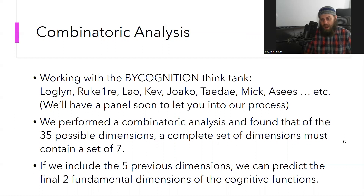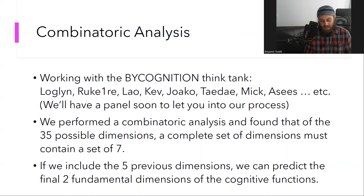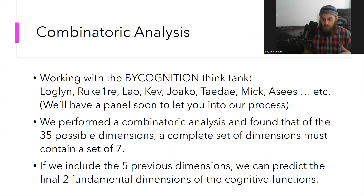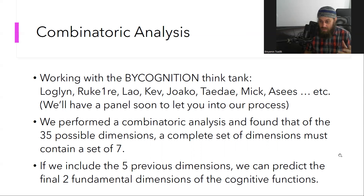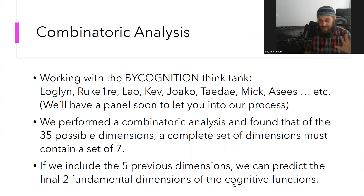We performed basically a combinatoric analysis and found that there are 35 possible dimensions. We do that through eight choose four, which ends up being 70 pairs — so that's 35 dichotomies. Out of these 35 possible dichotomies, a complete set of dimensions must contain seven, and we'll show you why it must be seven. All of the other 28 aren't really the primary dimensions, though some contribute. The core is seven. And so if we include the five previous dimensions, we can predict the final two dimensions of the cognitive functions.